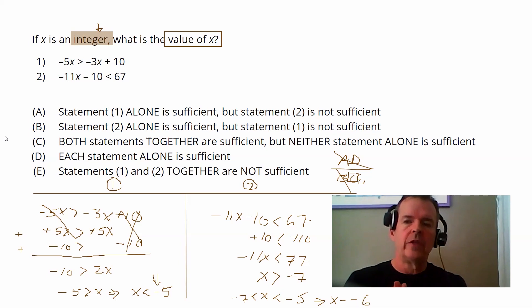So on data sufficiency, you want to make sure that you're looking for key terms that can be defining or limiting. And then also when you get information and expressions in the statements, make sure to simplify them so that you can work with that information in a more clear and easier to handle manner.